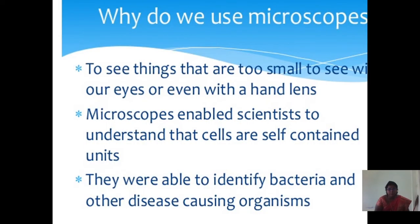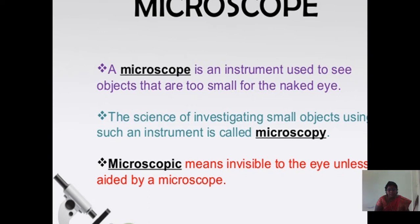Why do we use a microscope? To see things that are too small to see with our eyes or even with a hand lens. Microscopes enabled scientists to understand that cells are self-contained units, and they were able to identify bacteria and other disease-causing organisms. A microscope is an instrument used to see objects that are too small for our naked eye. Micro means small; scope means aim. The science of investigating small objects using such an instrument is called microscopy. Microscopic means invisible to the eye unless aided by a microscope.